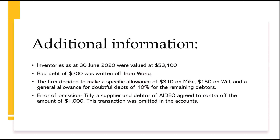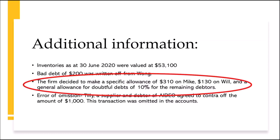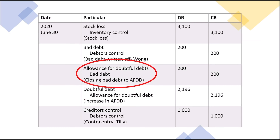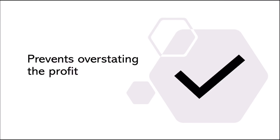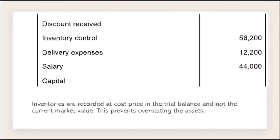This is seen when we make allowance for doubtful debts, which is used to absorb bad debts when they happen. This way, we understate the profit and avoid overexpending. Inventories are also recorded at cost price as per the historical cost concept to prevent overstating the asset value.